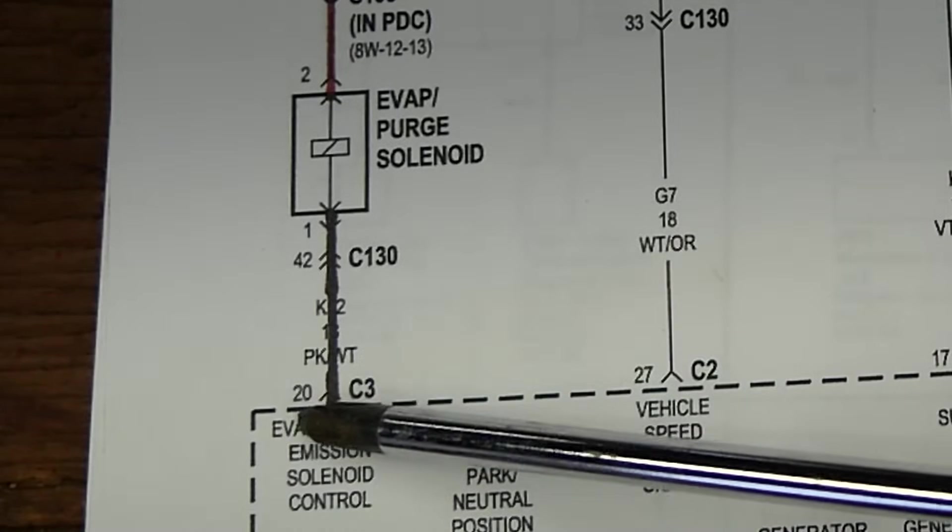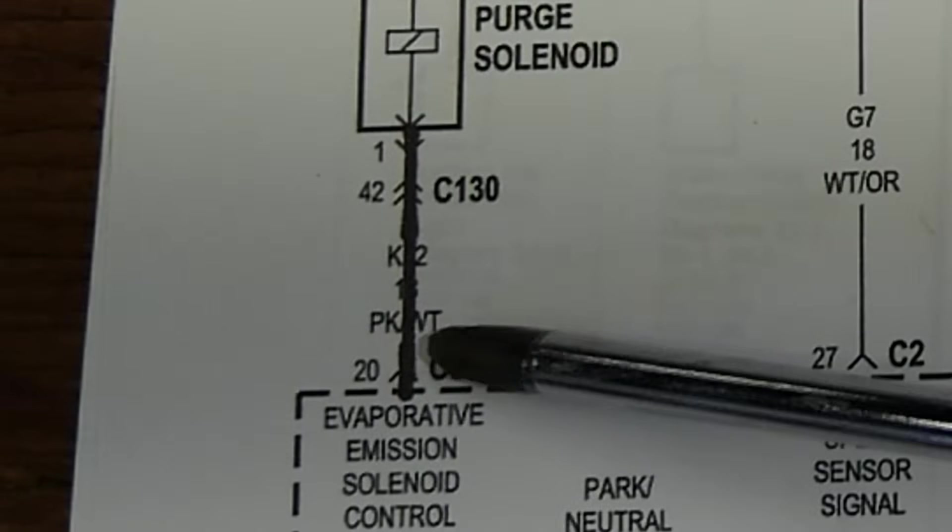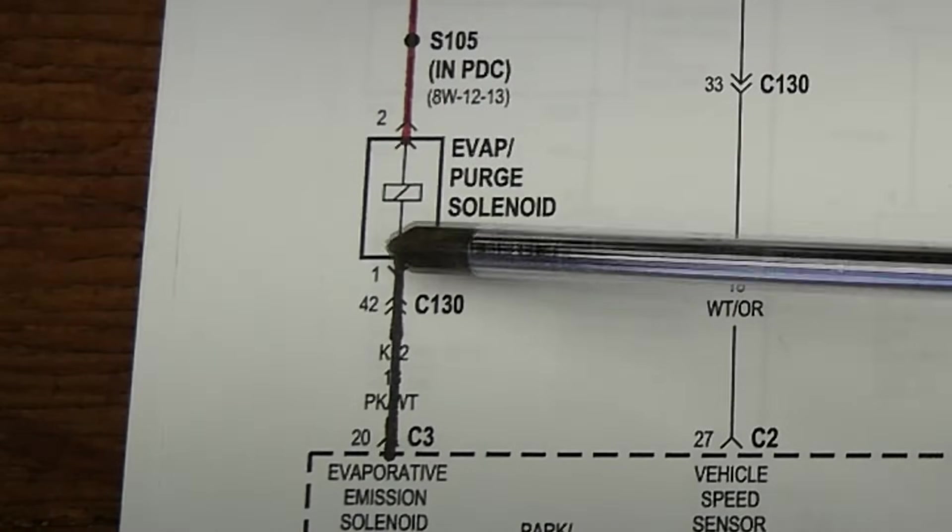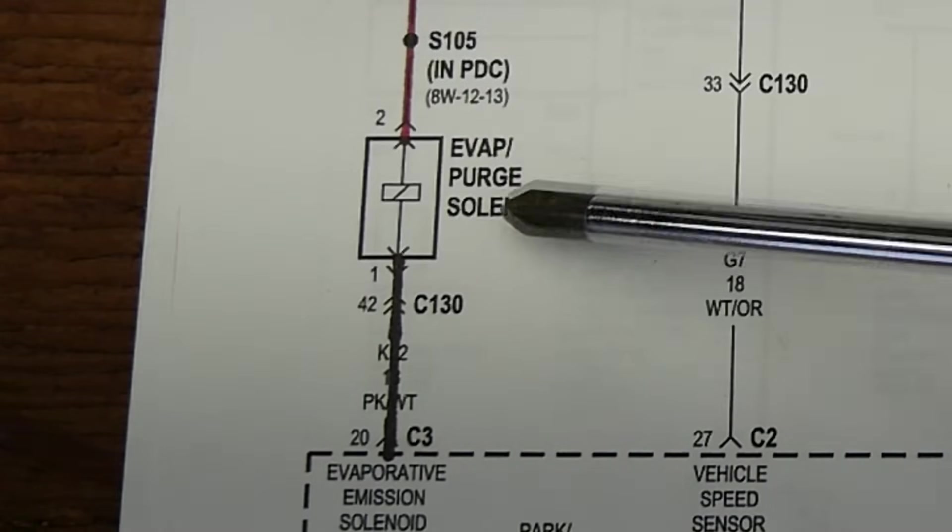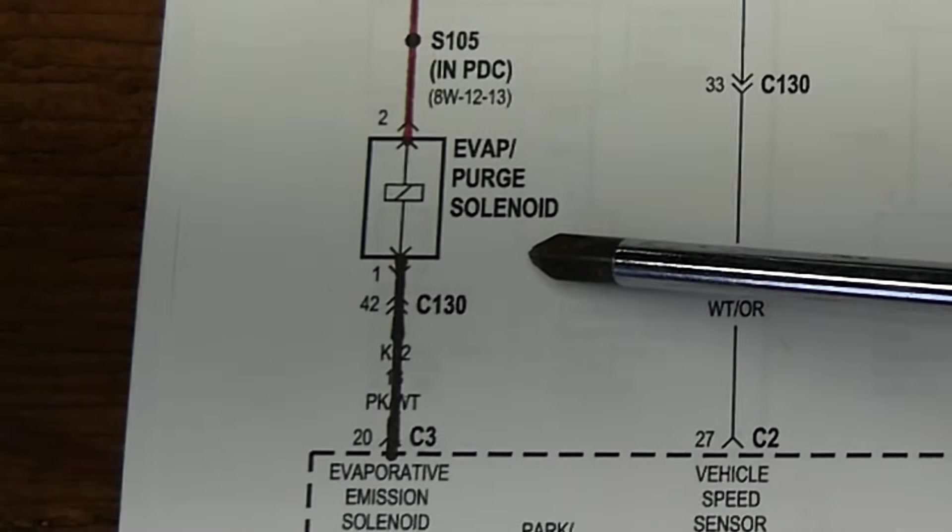Same thing on the ground side, you got the pin number, pin number 20, connector 3. There's the color of the wire. And, of course, you got 1 and 2 here, these are the number for the pins on the connector for the EVAP purge solenoid, which is basically going to be a 2 pin connector.